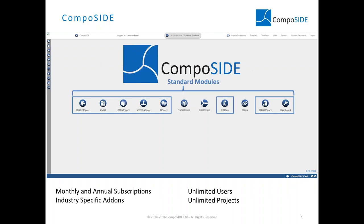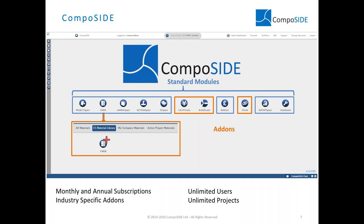When you subscribe to Composite, you get a standard suite of modules highlighted in blue, but we also offer add-ons. Yoast Scan and Blade Scan are two add-ons dedicated to industry solutions — Yoast Scan for sampling of vessels following ISO and GL regulations, Blade Scan for tidal and wind turbine blade design and analysis. There's also a link for finite element systems. Today the add-on we'll be looking at is the CMDB add-on, particularly the composite material library.